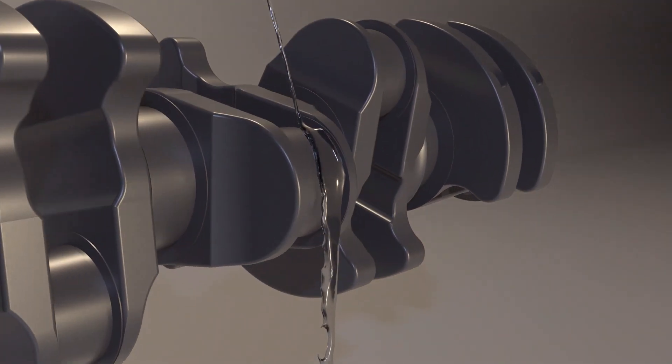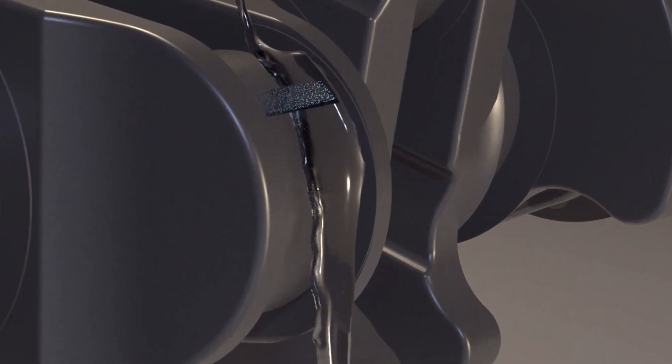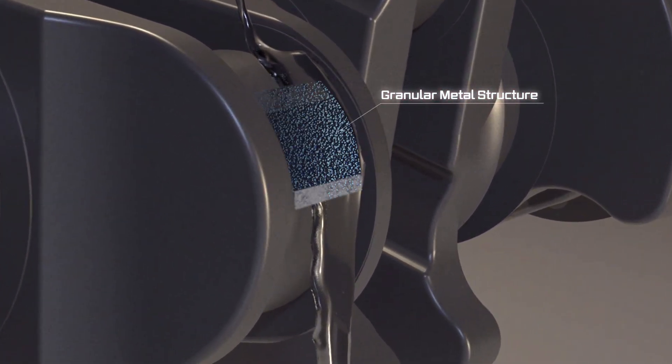Let's take a look at what laser peening is doing to the metal deep under the surface. Here is a close-up view of a metal surface and the granular metal structure below. The water forms an overlay that is transparent to the laser beam.